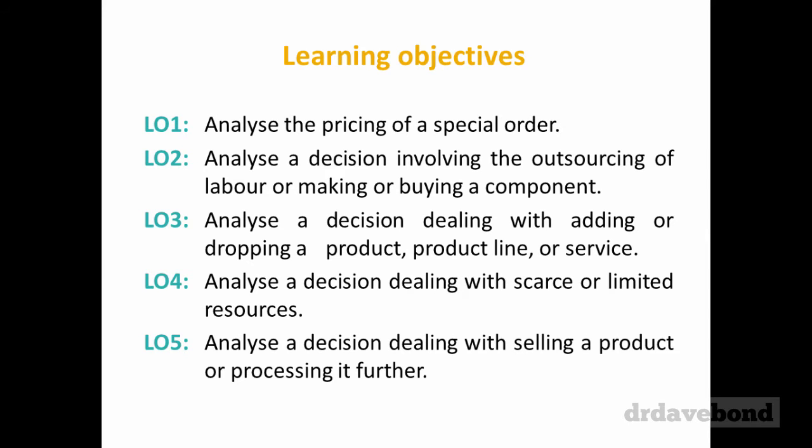There are five different scenarios we'll look at today, and a lot of this deals with cost, volume, profit from a couple of weeks ago, but it also has this underpinning idea of relevant costs, relevant revenues, and relevant information. We're going to look at a special order, which we've actually looked at before. We'll also look at what happens if we want to make or buy a component — keeping things internal within the business or buying components from outside.